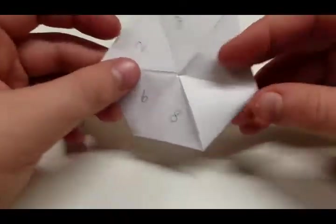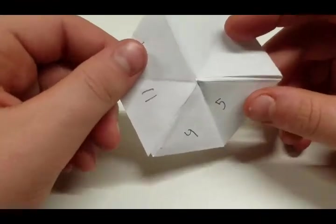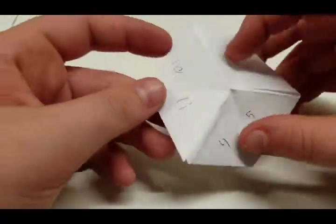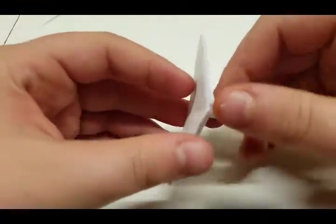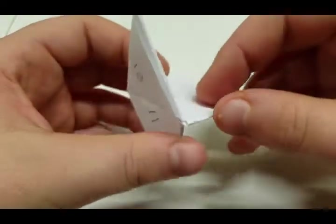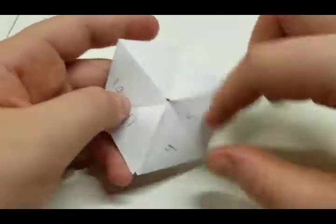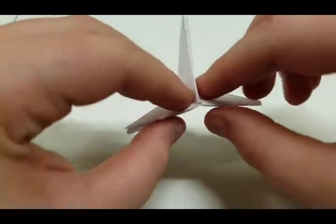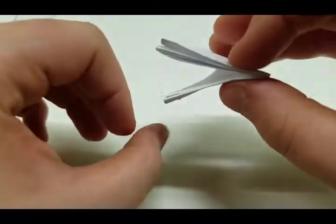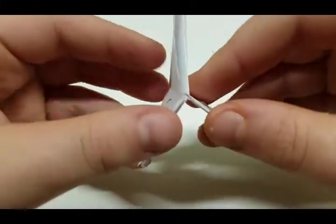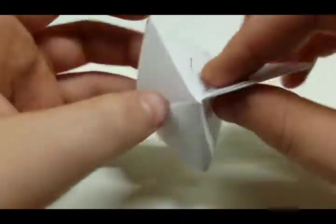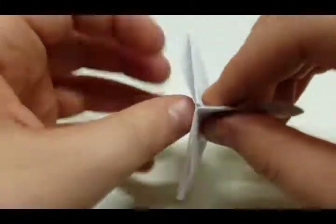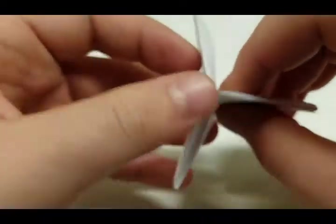And then take it off. So now you have your hexaflexagon. So how you flex it is you'll push down—so it's like this. Push down on three outer edges, so it kind of makes a triangle like this. So you're able to fold it into like that. So make the triangle like that and just pull the edges back, and it goes like that forever.